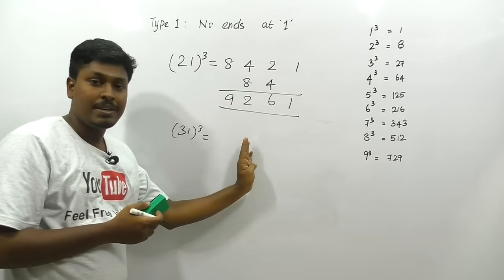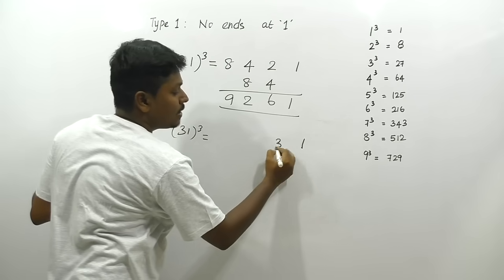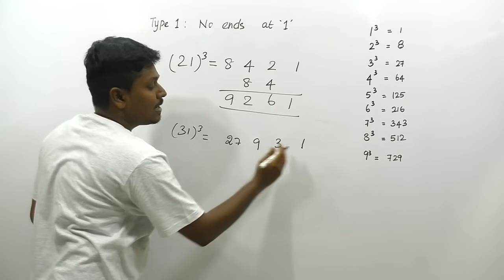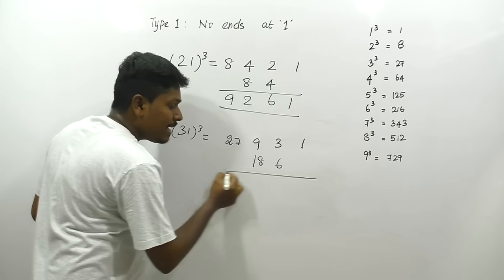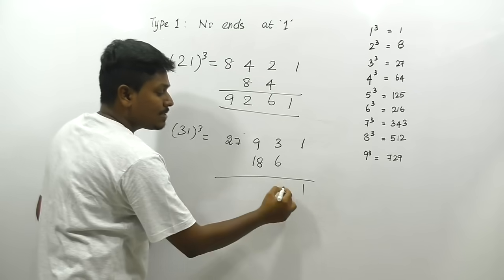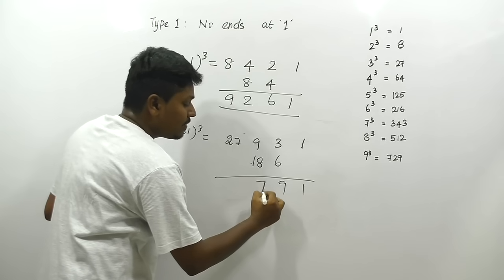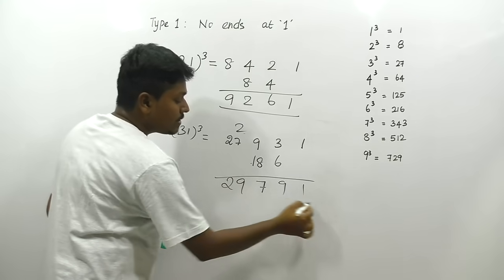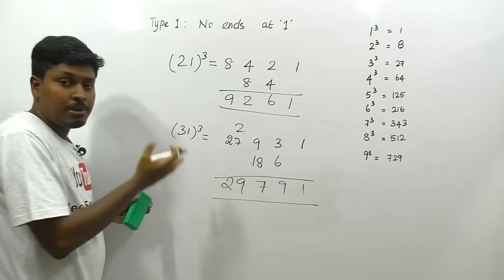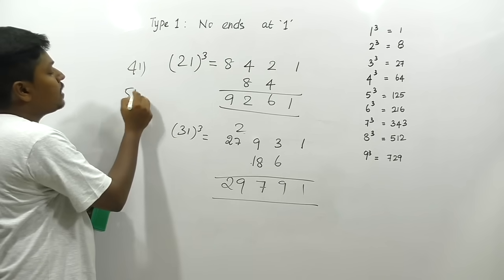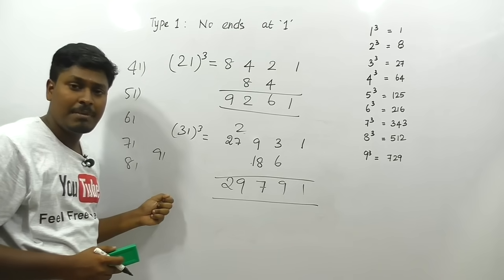For 31³ (Type 2, number ends in 1 — write from right): write 1, 3, then 3² = 9, 3³ = 27. Double the center numbers: double 3 = 6, double 9 = 18. From right: 27 → write 7, carry 2; 18+2=20, 20+9=29 → write 9, carry 2; 6+2=8; then 1. So 31³ = 29791. Practice similarly for 41³, 51³, 61³, 71³, 81³, 91³.